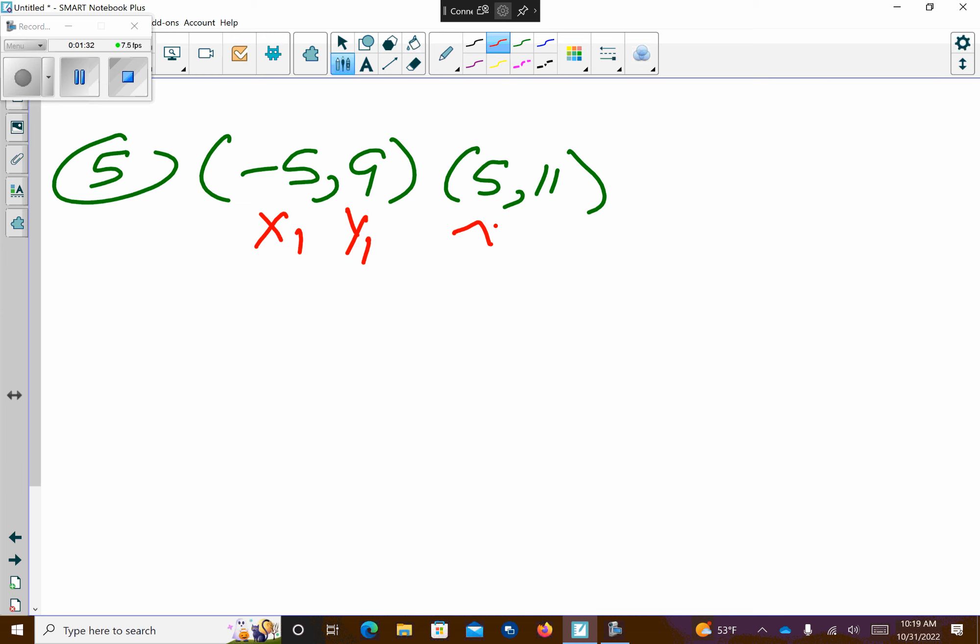All right, x1, y1, x2, y2. Slope equation is this. All right, so y2 I listed as 9, y1 there's a subtraction sign is 9. x2 minus, minus that.